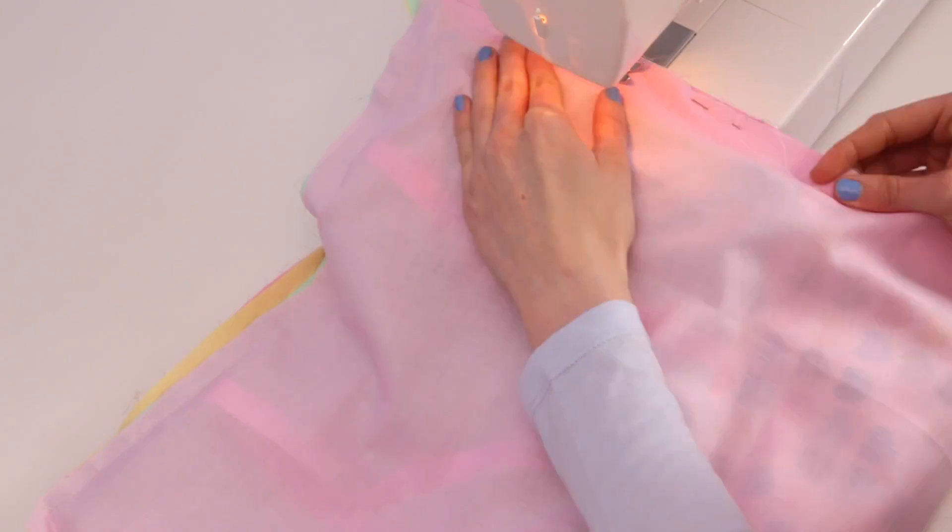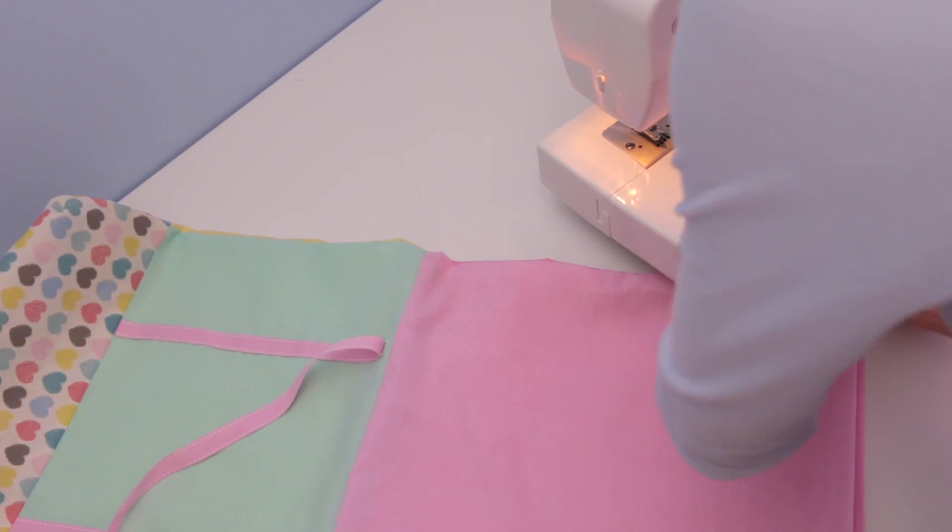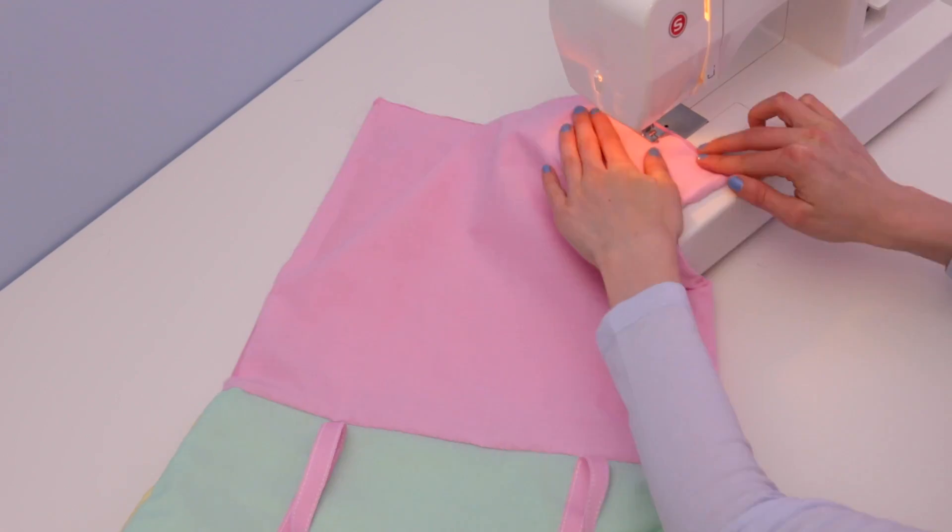Sew the pink side edges together, flip the pink part inside out, and fold over the bottom edge before sewing it together. And finally, I pop the pink lining inside the bag.